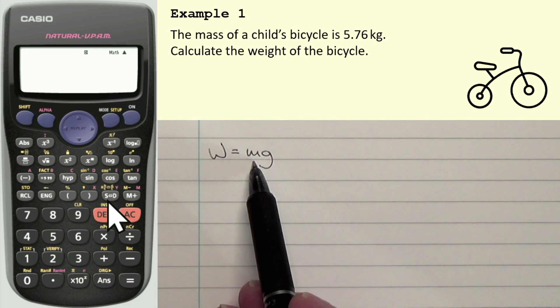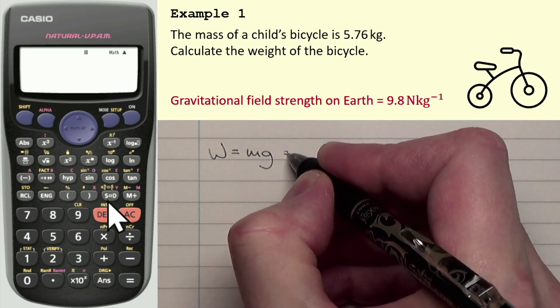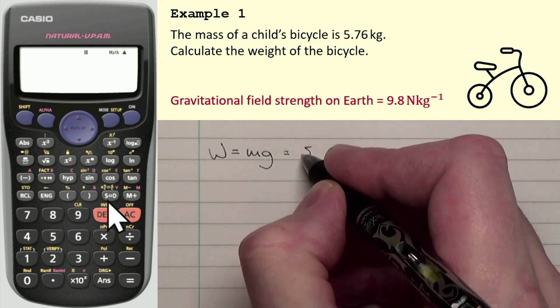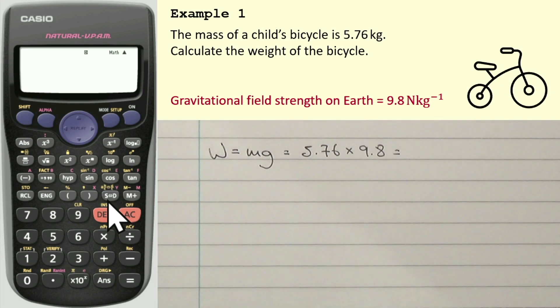Now M we know, that's 5.76. G we don't know, but we would look at the very start of the exam on the data sheet, and that would tell us that on Earth, the gravitational field strength is 9.8 newtons per kilogram. Now, you know what I'll do? I'll just enter these values in, and then we'll round the final answer. So we'll do the substitution first. So that's 5.76 times 9.8. Let's find out what value that would actually give.